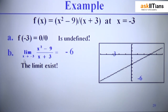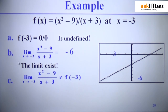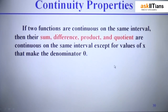Next, we find the limit of (x² − 9) / (x + 3) as x approaches −3 from the left or right. That limit comes out to be −6, so the limit does exist. However, since the function is undefined at x = −3 and the limit value −6 and the function value are not equal, the function is not continuous at x = −3.